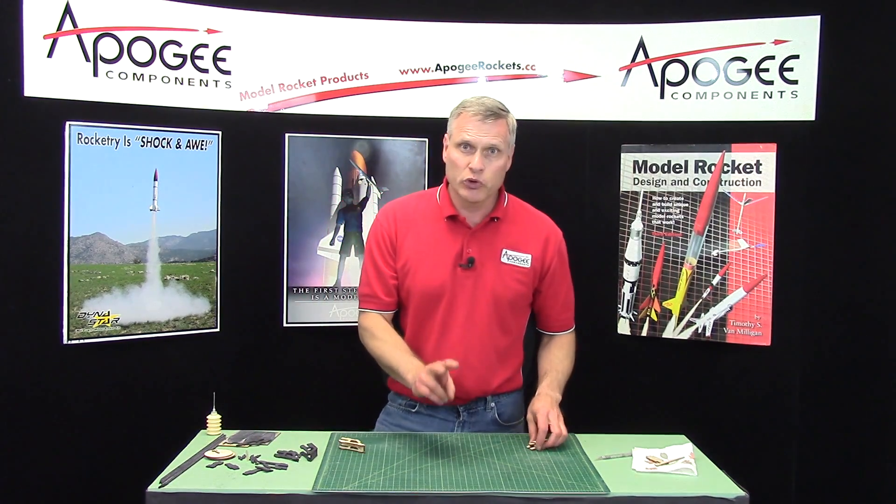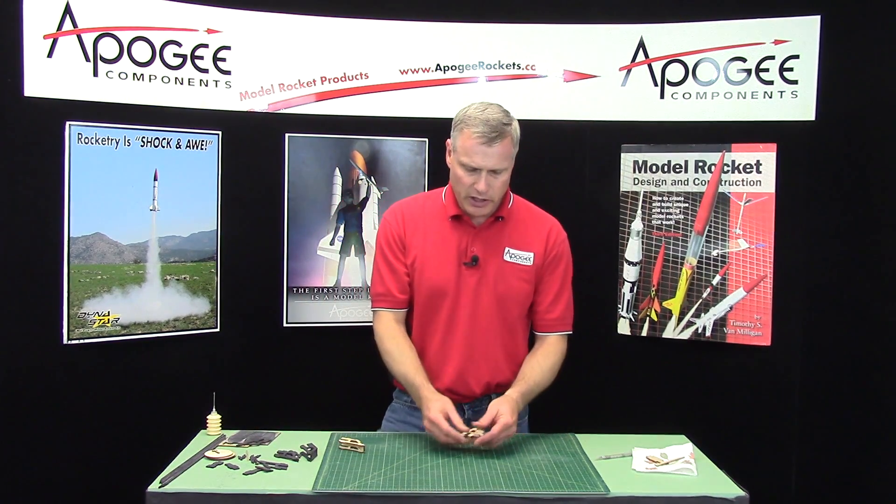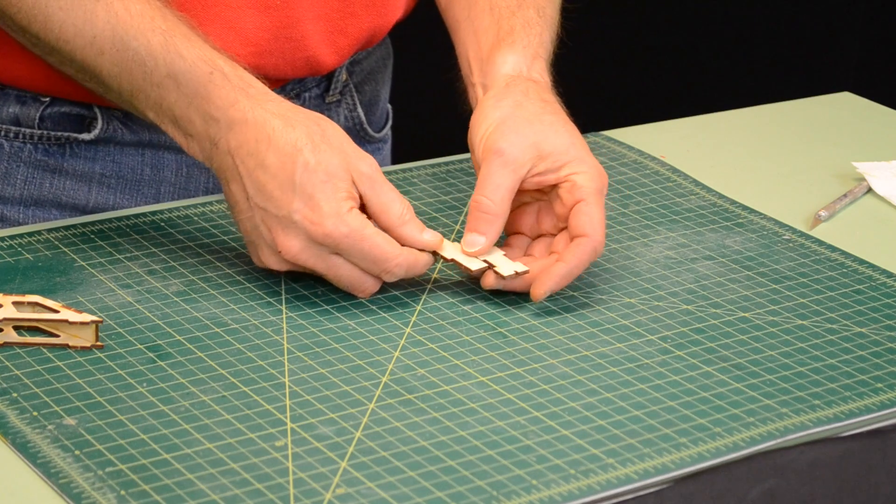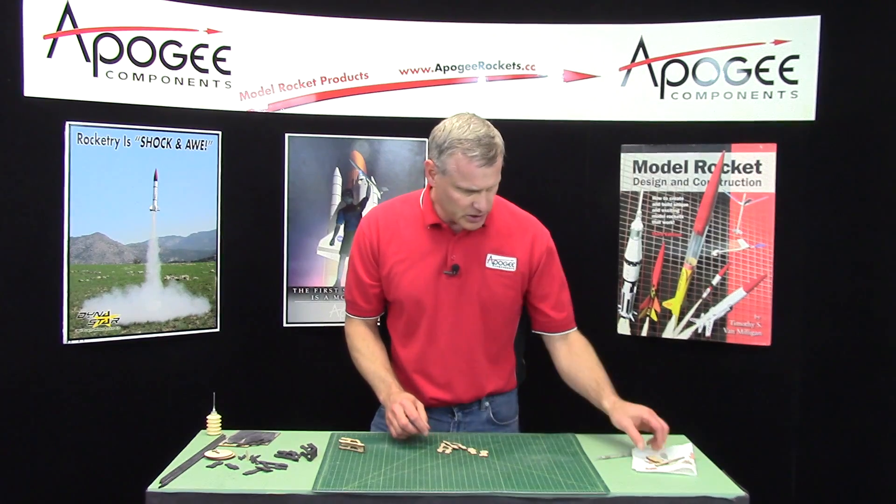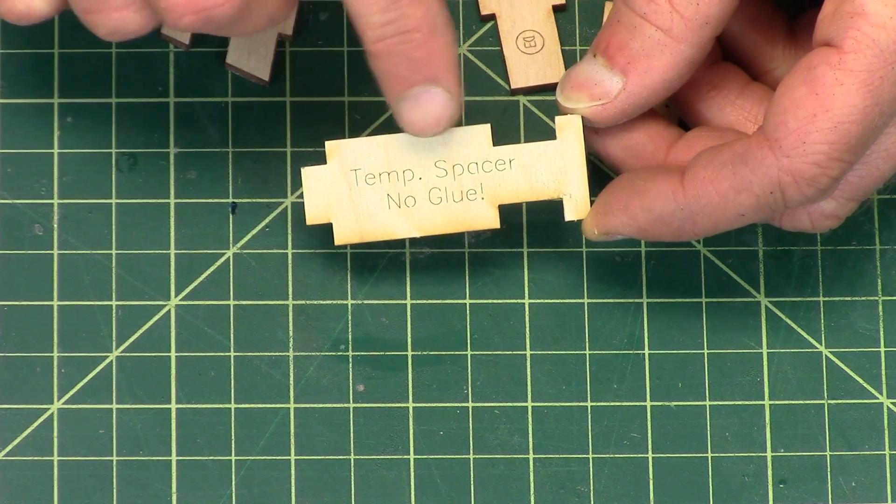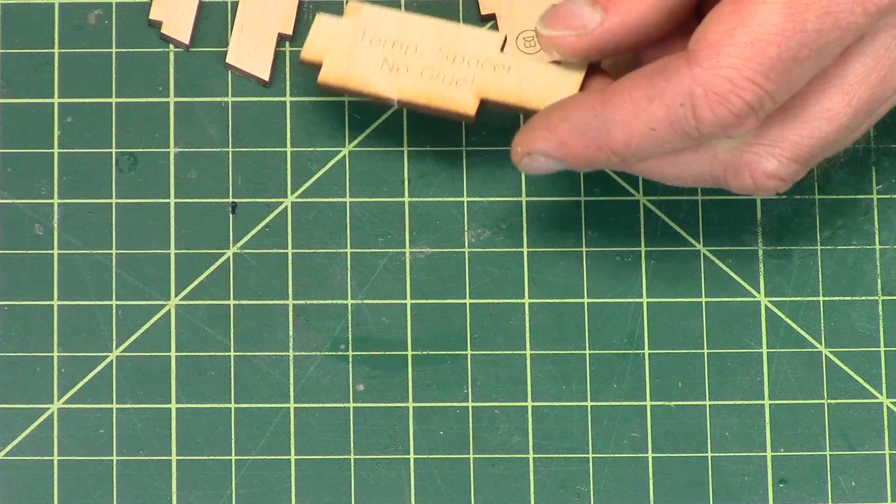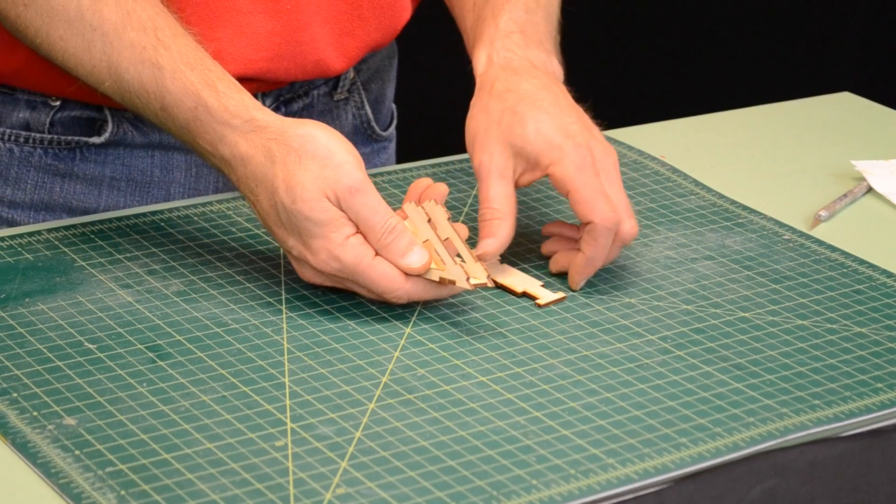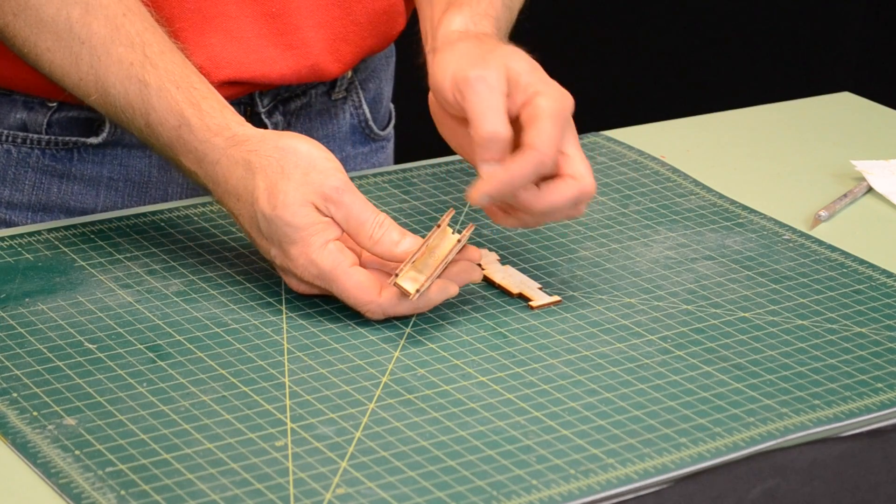We're going to need two of part D1 and then also D3 and D2. You'll also need the gluing spacer. This is the temporary spacer, and we're not going to glue this. This is just to get the distance right between the legs because there's nothing in between.